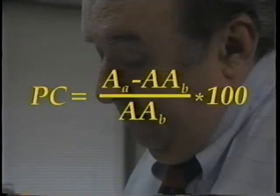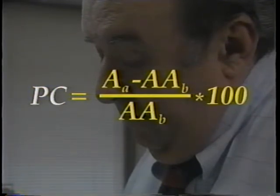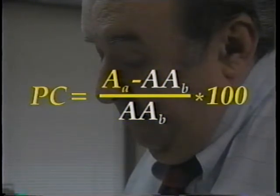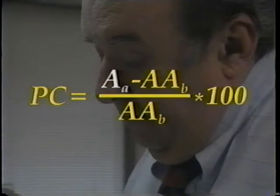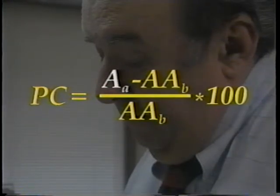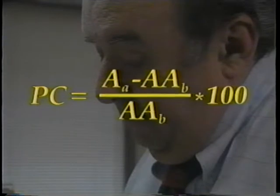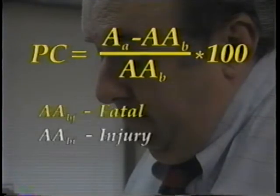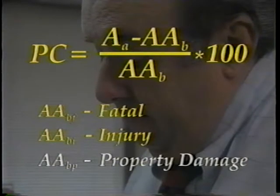Now Bill can calculate the percent reduction in accidents due to the improvement. PC is the percent change in number of accidents due to improvement. Double A sub B is the adjusted annual number of accidents before improvement. And A sub A is the annual number of accidents after improvement. When the percent change is negative, the total number of accidents following the safety improvement has dropped. A positive number means it increased. He can use the same formula for the adjusted annual number of fatal, injury, or property damage accidents before the safety improvement.